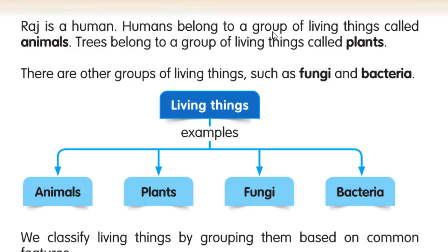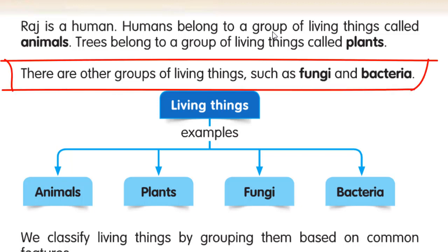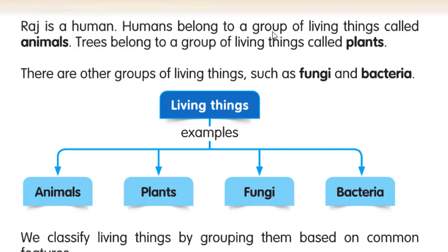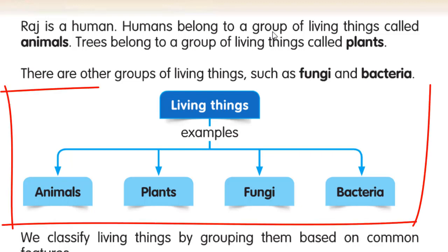Ada lagi jenis lainnya yaitu there are other groups of living things such as fungi and bacteria. Ada lagi jenis-jenis dari living things, contohnya adalah fungi and bacteria. Dan dia sudah mengklasifikasikannya, mengkelompokkannya seperti di bawah ini: living things — examples: animals, plants, fungi, bacteria.